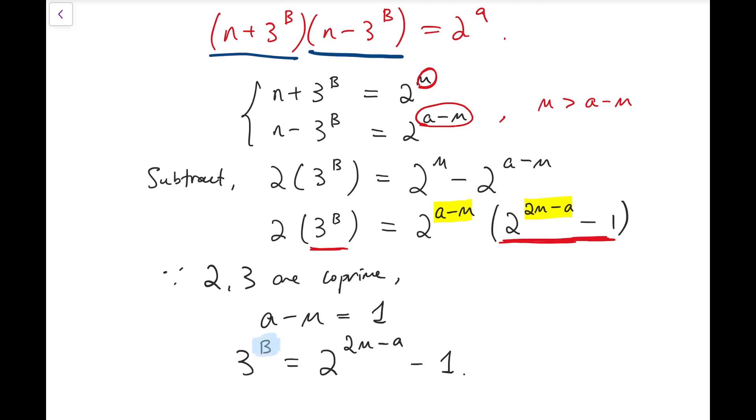Now, at this point, we know that B is positive so that means left-hand side is at least 3. So that means we must have these numbers, I mean, these exponents to be positive as well at the right-hand side.